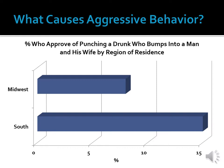Surveys also show that Southerners are more likely to approve of a person kicking a drunk person's rear end for bumping into him and his wife than non-Southerners are. This shows that Southerners are more likely to interpret events as a threat to their honor or reputation, and because of this, people who feel a situation is a threat to them will respond aggressively.